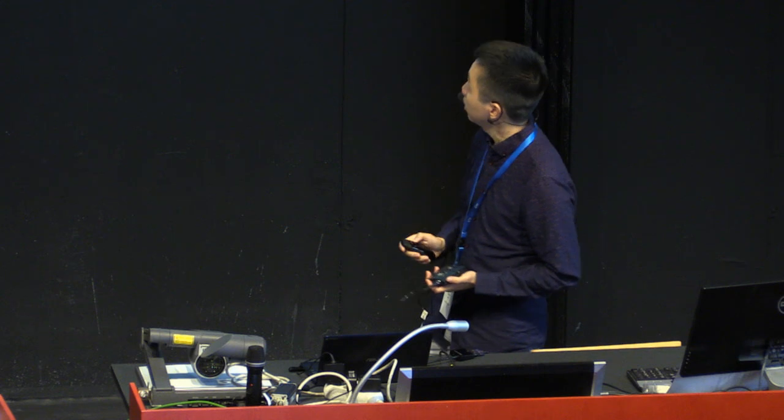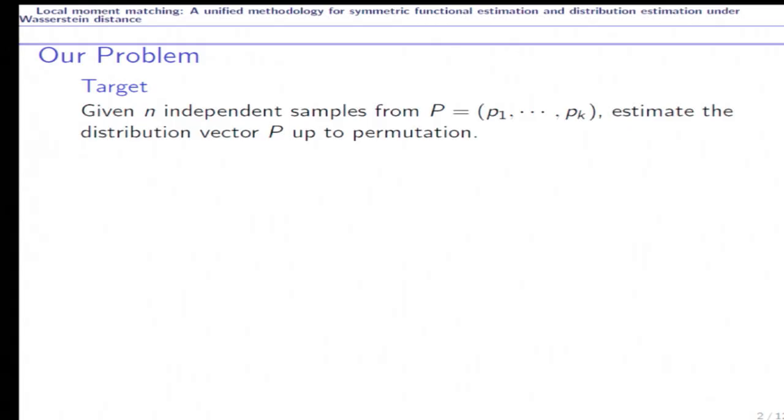Let me first introduce the problem. Given n independent samples from a discrete distribution p, that is p1 to pk, we'd like to estimate the distribution vector p up to permutation. Here, the parameter k is the support size of the distribution.